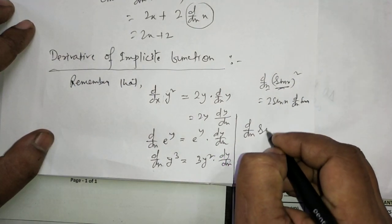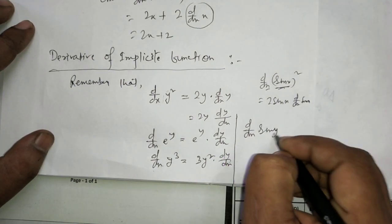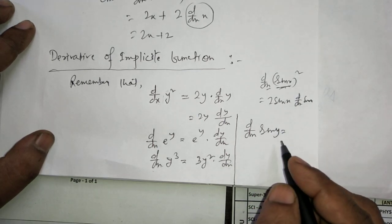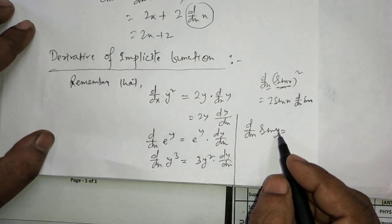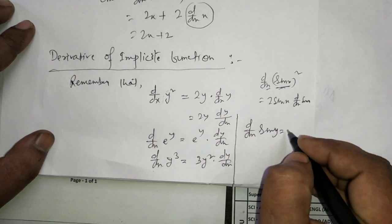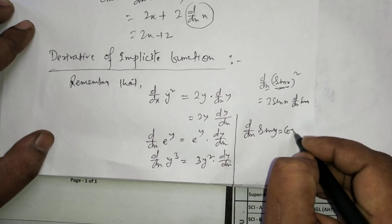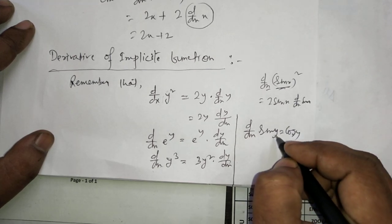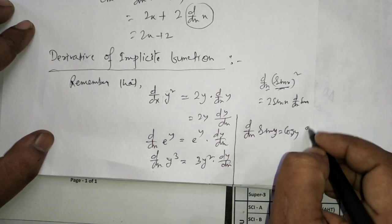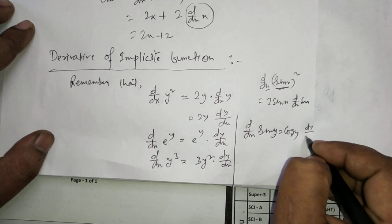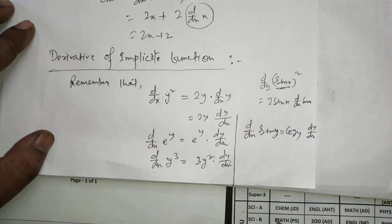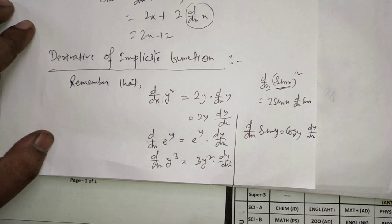Similarly, d/dx of sin y: if we replace y with x, d/dx of sin x equals cos x. So d/dx of sin y equals cos y, and since y and x are different, we multiply by dy/dx. This chain rule method is what we apply for finding derivatives of implicit functions.